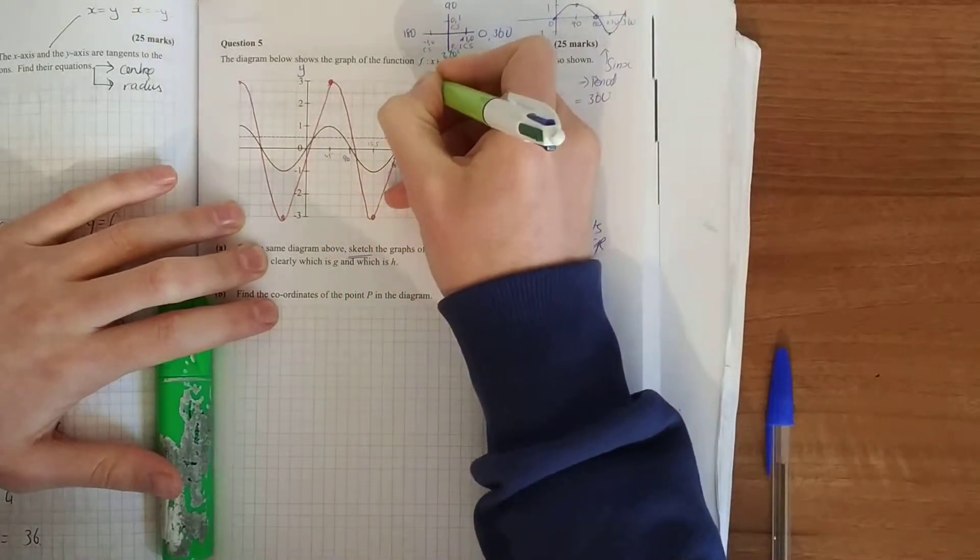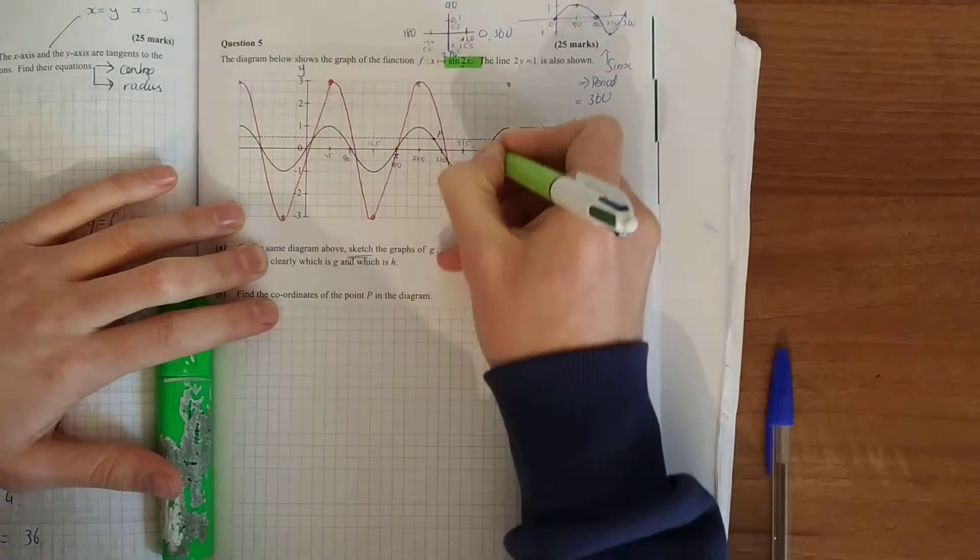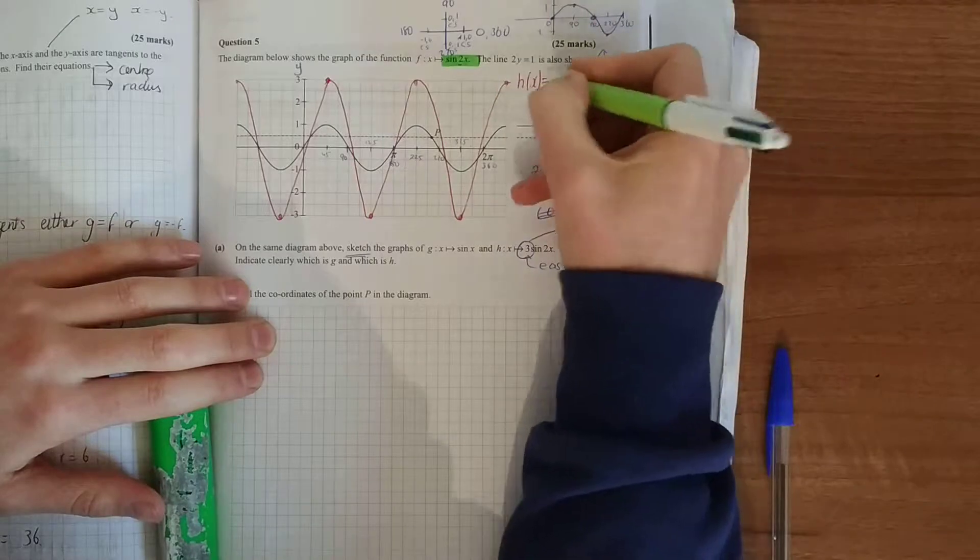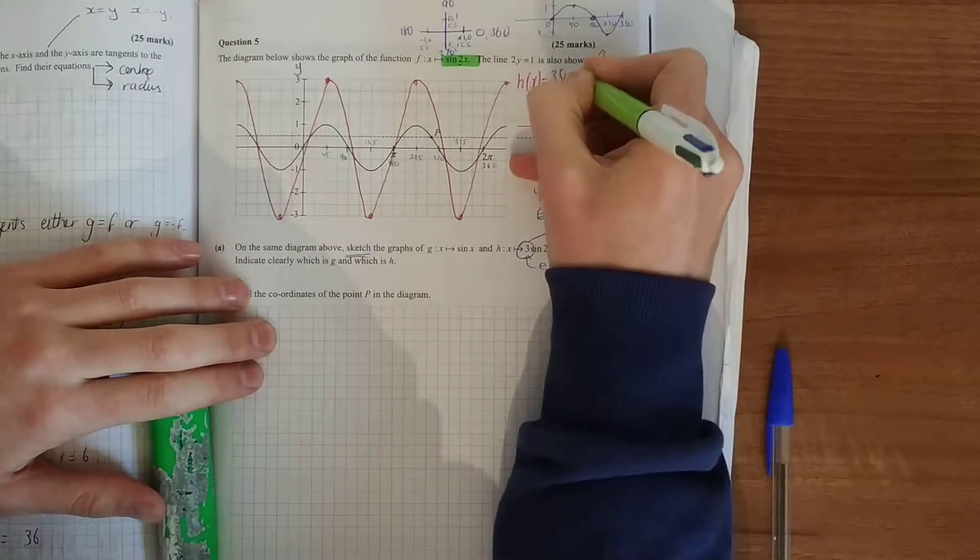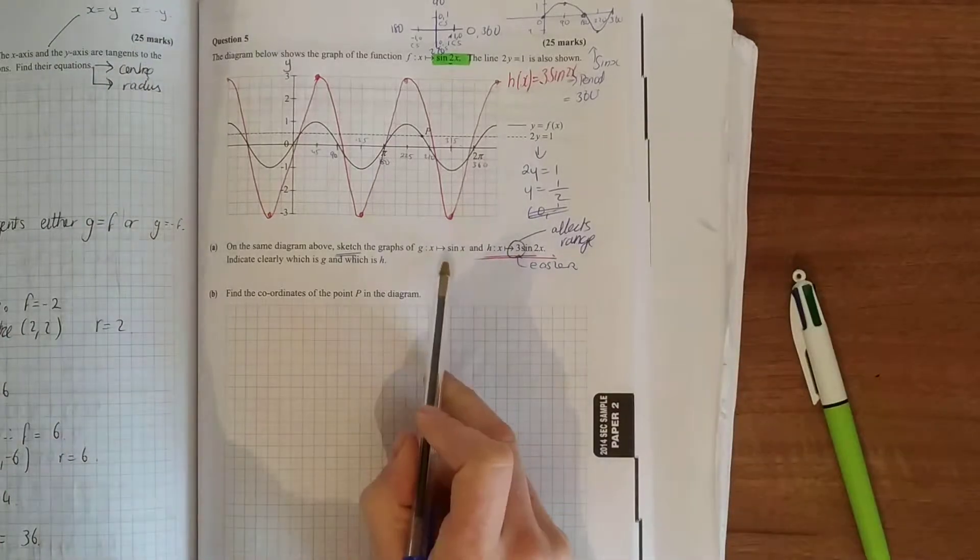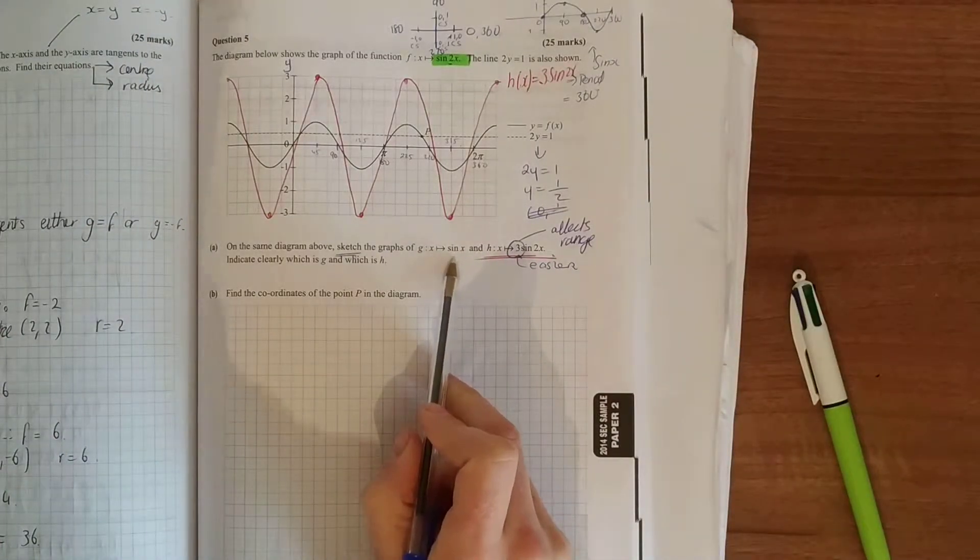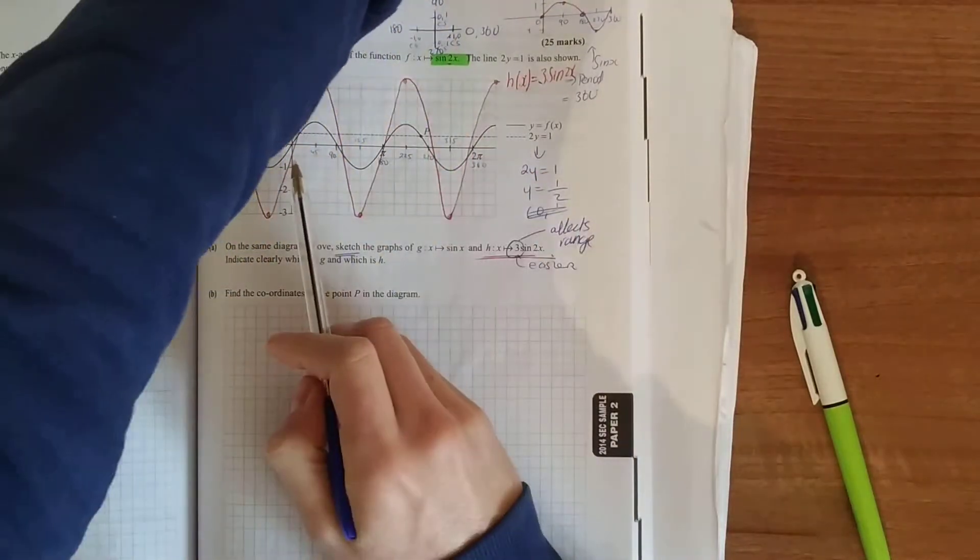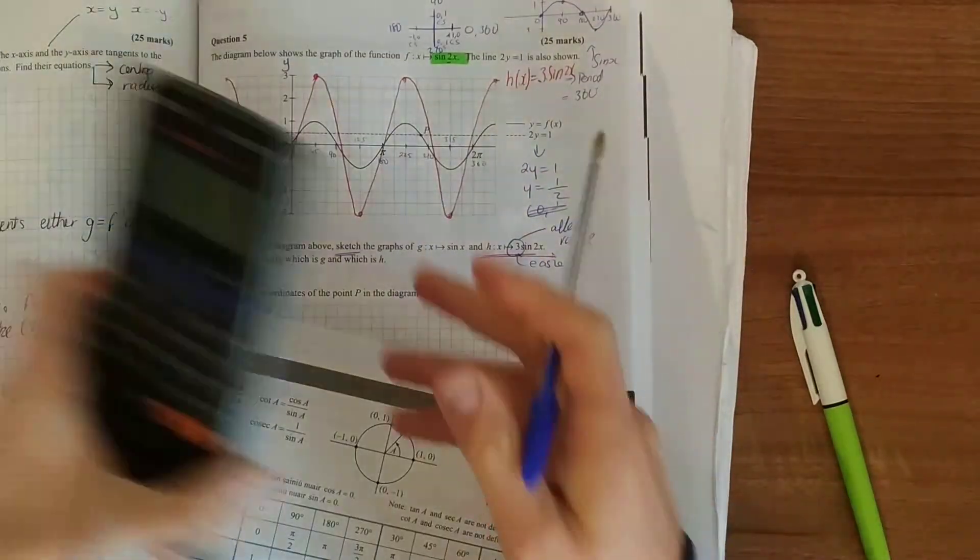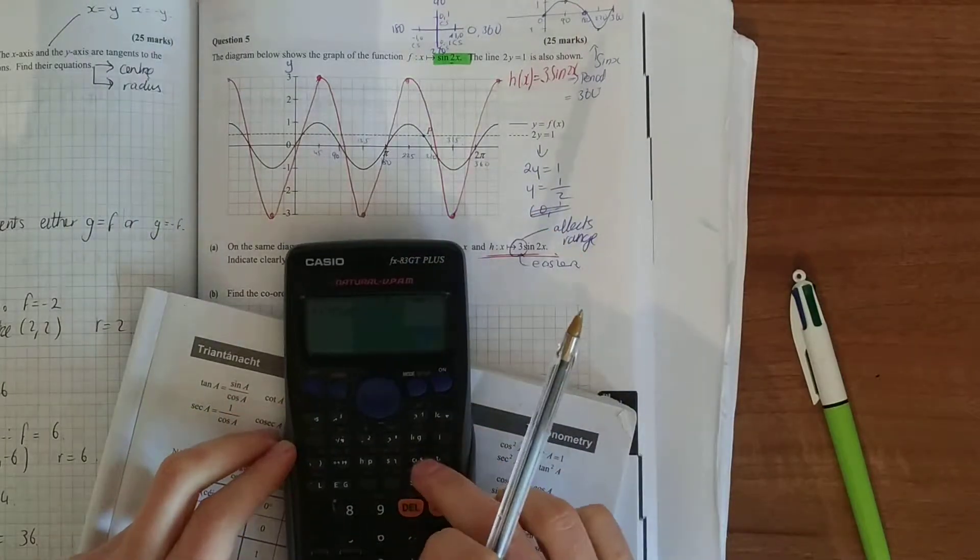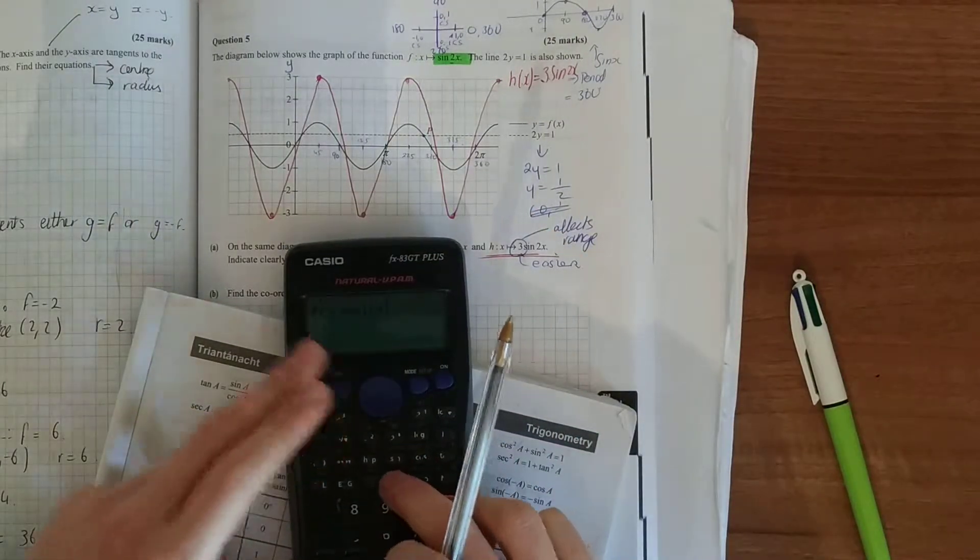That's h(x) = 3 sine 2x. The other one's even easier: sine x. Sine x is the original function which we have up here. You can put it into your calculator, mode 3 in your calculator. I'm drawing sine of x.